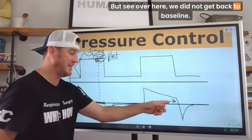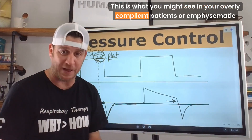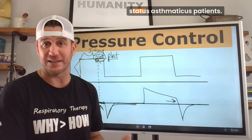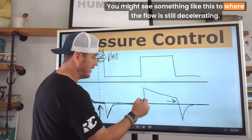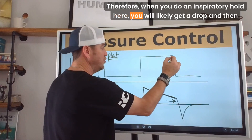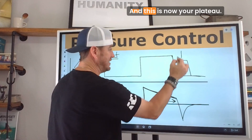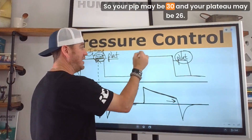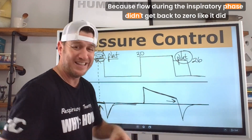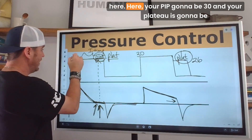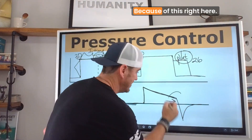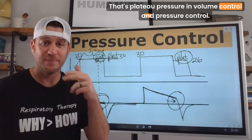There is an instance when this is not the case. In overly compliant patients, emphysematous patients, or severe obstructive patients like COPD or status asthmaticus, the flow may not decelerate all the way back to zero during the inspiratory phase. In that case, when you do an inspiratory hold, you will likely get a drop — so your PIP may be 30 and your plateau may be 26. Contrast that with the normal scenario where flow reaches zero and PIP equals plateau at 30. The difference comes down to whether flow returned to zero during the inspiratory phase.